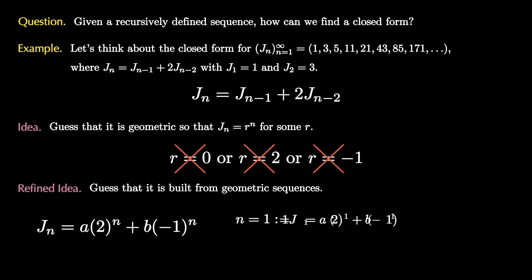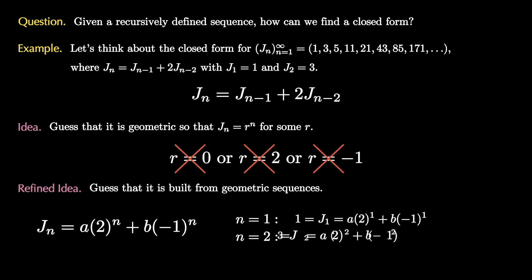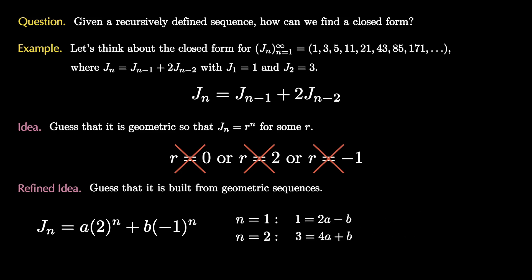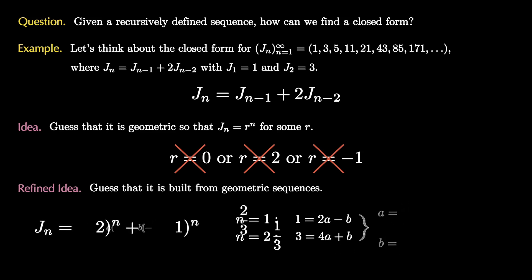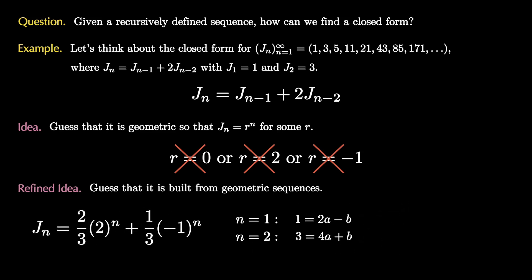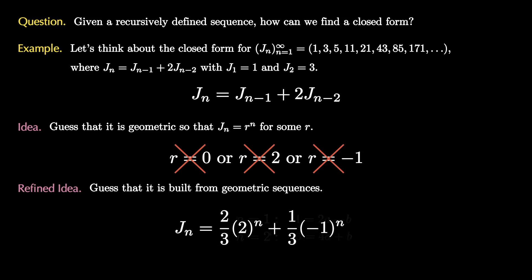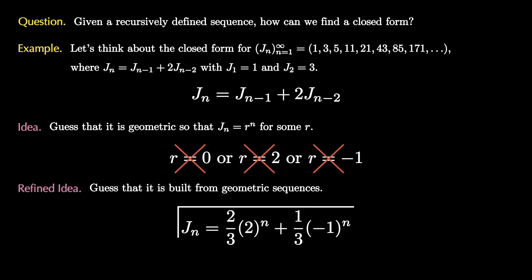But now we have a refined idea: we guess that j_n is built from geometric sequences, so j_n equals a times 2 to the n plus b times negative 1 to the n, where a and b are constants. Using our data for n equals 1 and n equals 2 gives us two equations: 1 equals 2a minus b, and 3 equals 4a plus b. Solving these, we find a equals 2 thirds and b equals 1 third. Plugging these in, we now have a closed formula for j sub n, which you can check against the data.